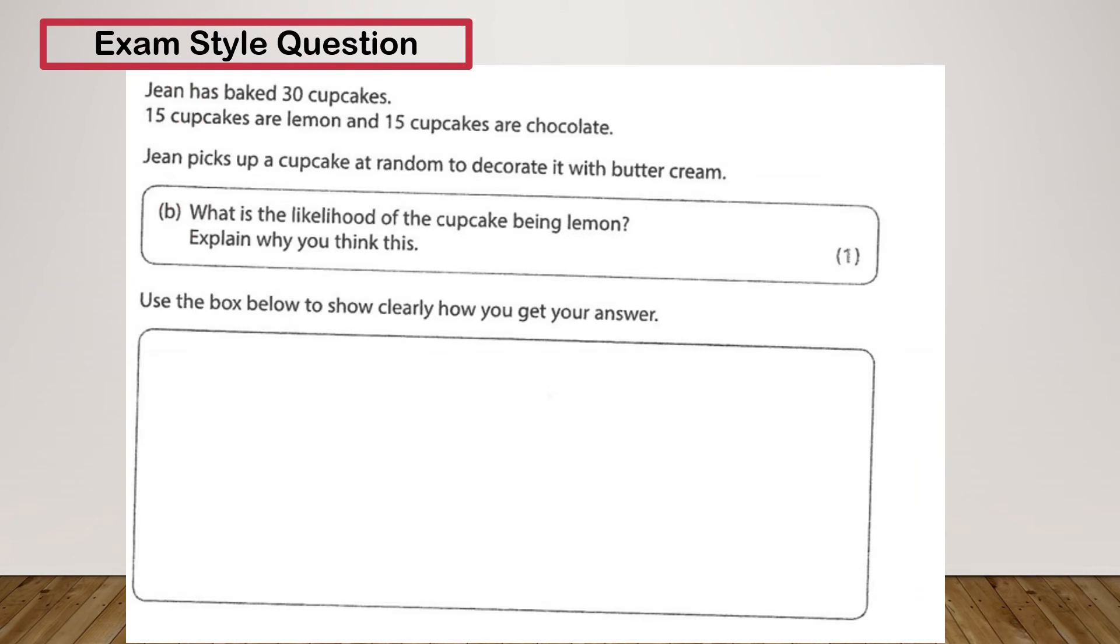Let's have a look at another one. So Jean has baked 30 cupcakes: 15 cupcakes are lemon and 15 cupcakes are chocolate. Jean picks a cupcake at random to decorate it with buttercream. What's the likelihood of the cupcake being lemon? Explain why you think this, one mark.